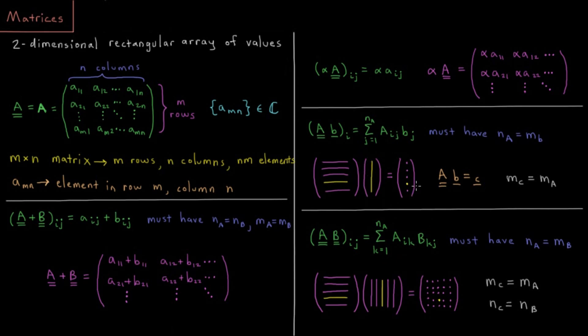If not, then they would be said to be incompatible. We can't multiply them. In the resulting vector, the number of elements is going to be equal to the number of rows we have in the initial matrix.